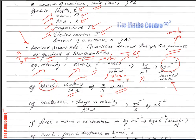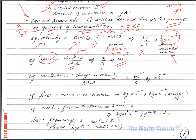Let's look at acceleration. Acceleration is defined as the change in velocity over time. The change in velocity is given in meters per second, and time is in seconds. So meters per second divided by seconds gives meters per second squared.